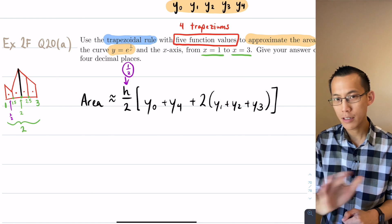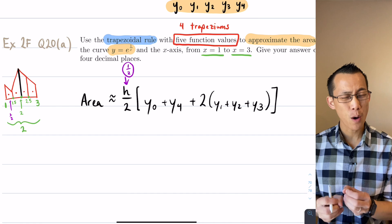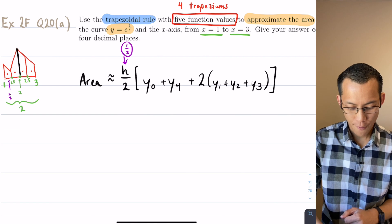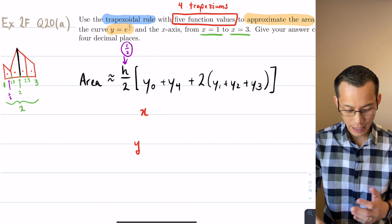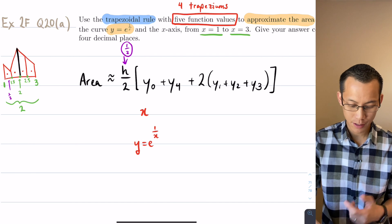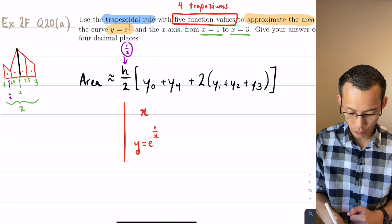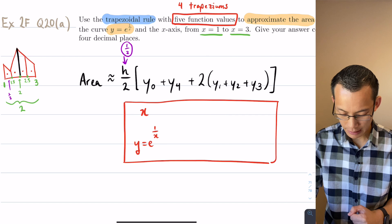One of the helpful ways to make sure you do all the substitution correctly, which some people find useful, is to draw a table. This is not necessary, but it is really helpful to make sure you get all of your values correct. So what I can do is I can say for each of the x values I'm going to get a corresponding y value. Don't forget that the y values are e to the 1 on x.